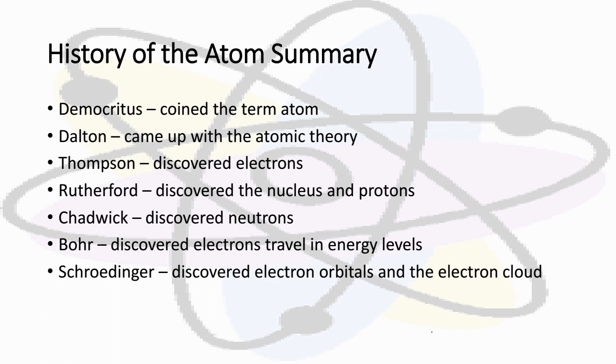Let's sum up what we've learned. History of the atom summary: Democritus coined the term atom. Dalton came up with the atomic theory. Thompson discovered electrons. Rutherford discovered the nucleus and protons. Chadwick discovered neutrons. Bohr discovered electrons travel in energy levels, and Schrodinger discovered electron orbitals and the electron cloud.